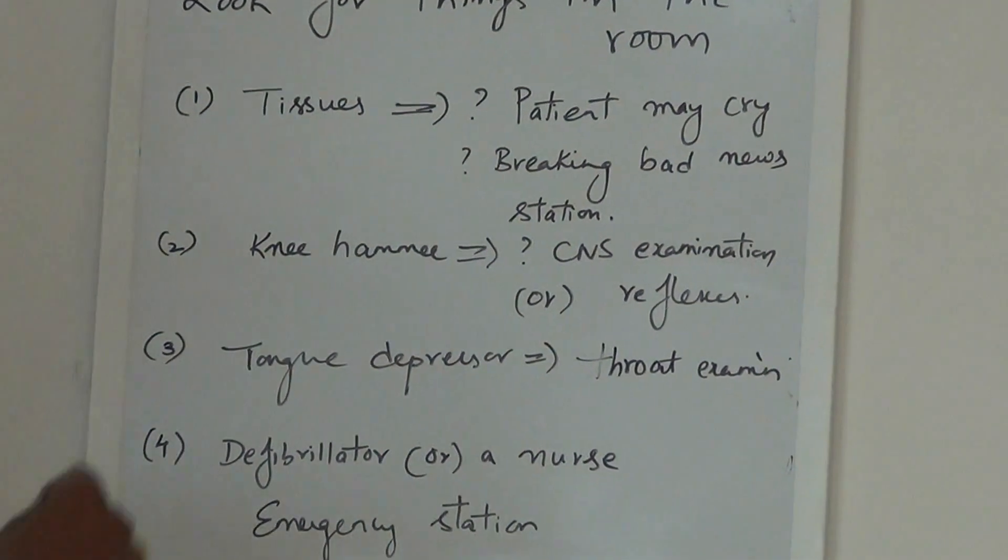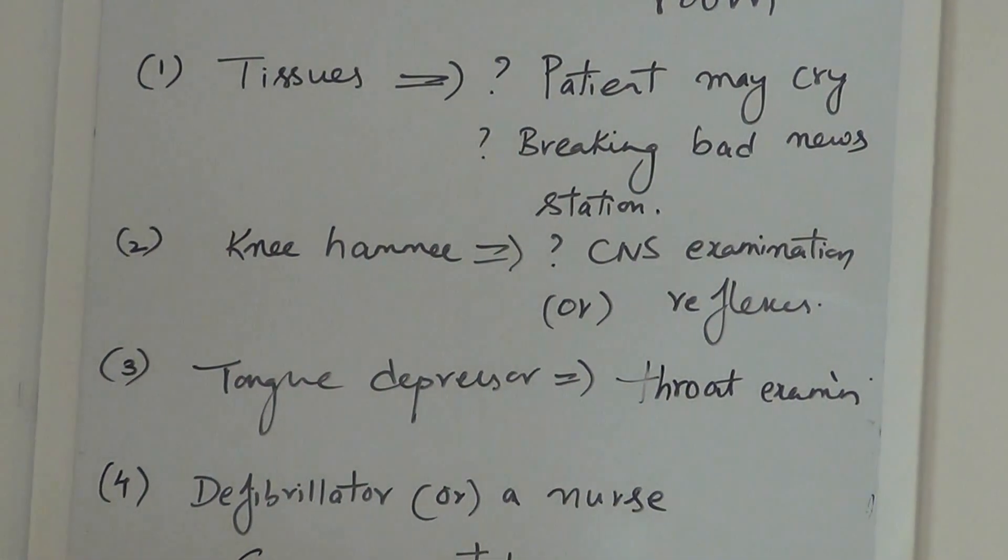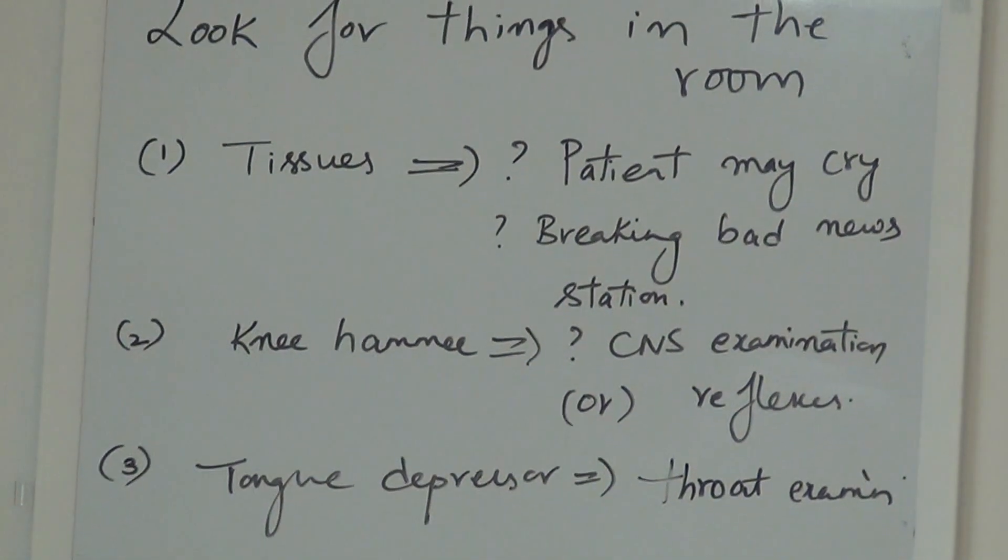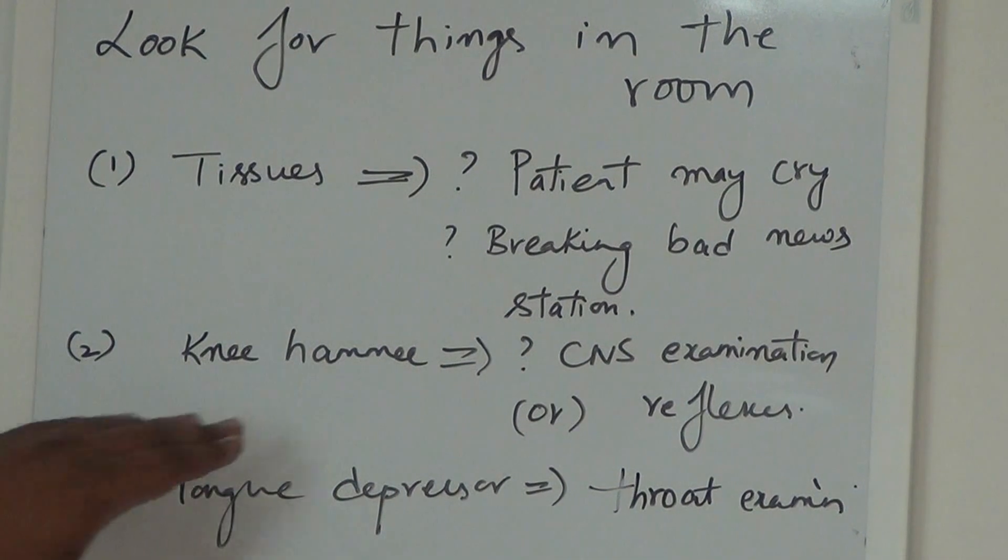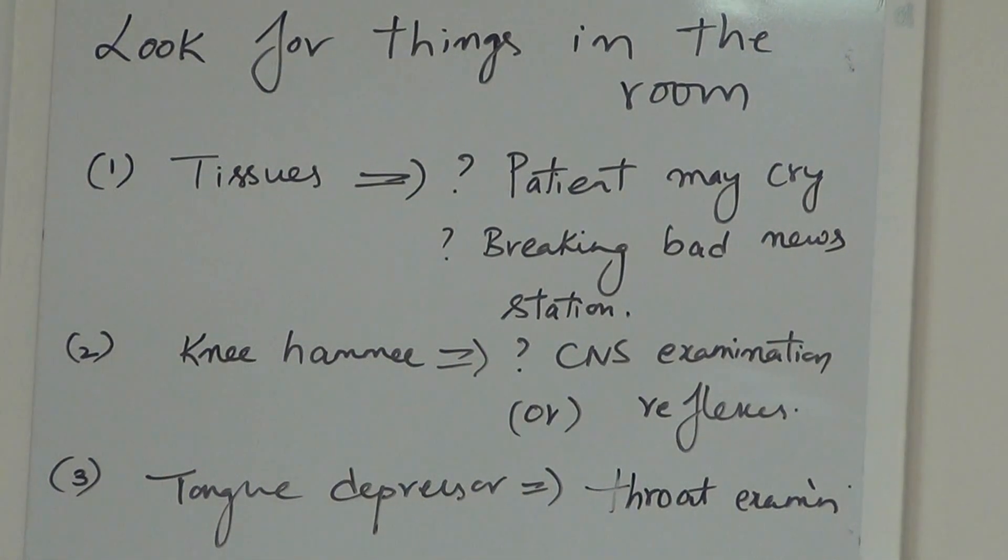If you notice a knee hammer while you're taking history and you see it on the table beside the examiner or patient, remember they don't keep all the instruments. They usually keep only things that are relevant for the station.